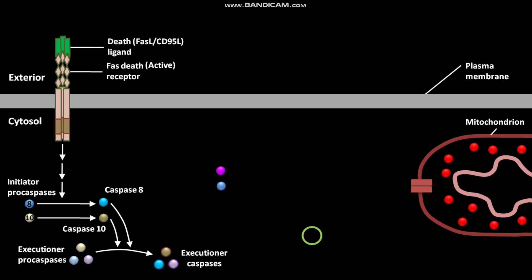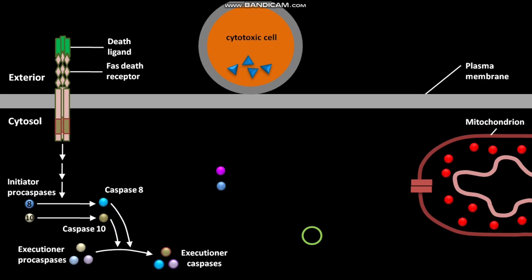During the intrinsic pathway of apoptosis, cytotoxic cell dispersed by immune system attaches to the plasma membrane of target cell. The plasma membrane of cytotoxic cell then fuses with the plasma membrane of target cell.